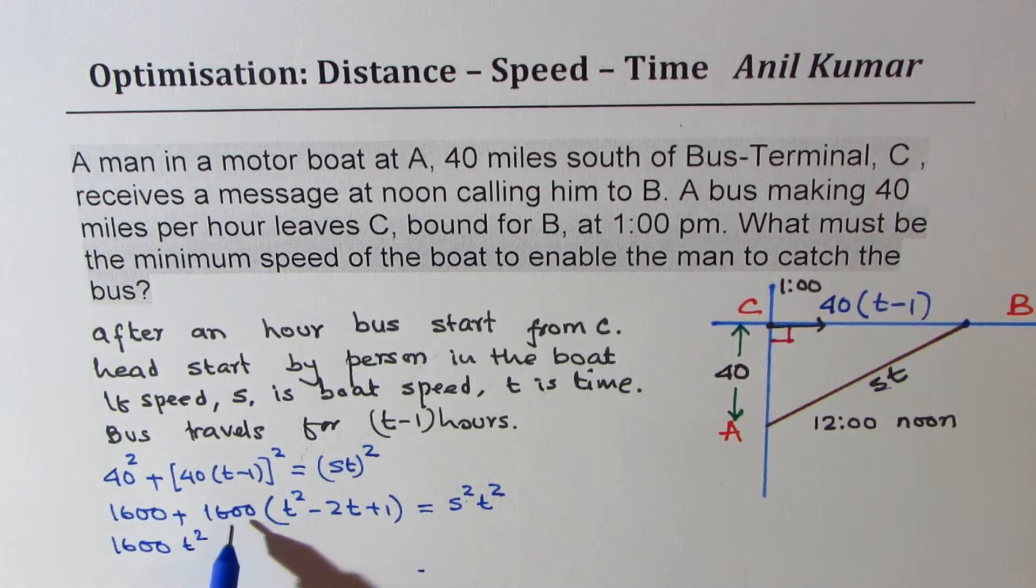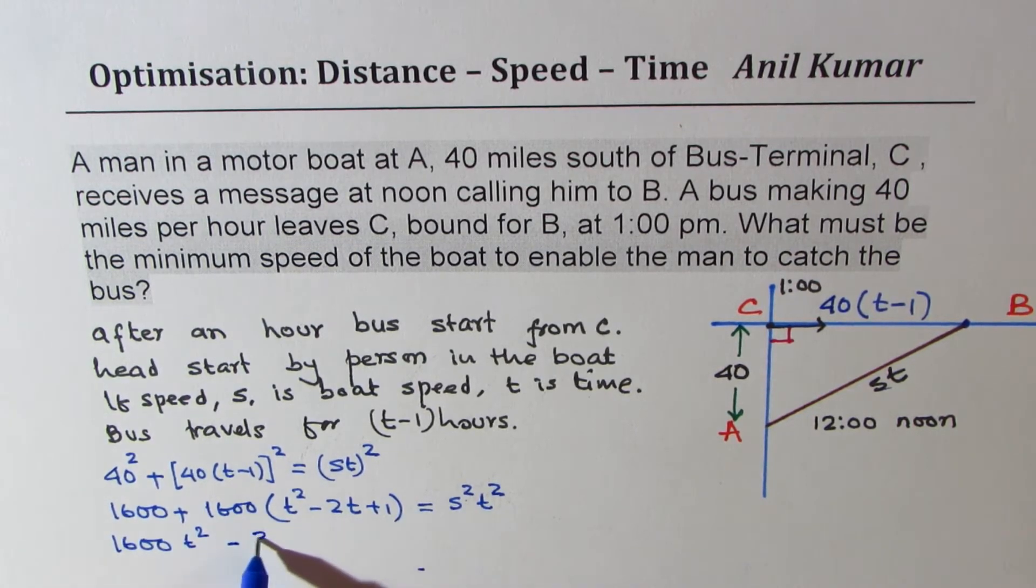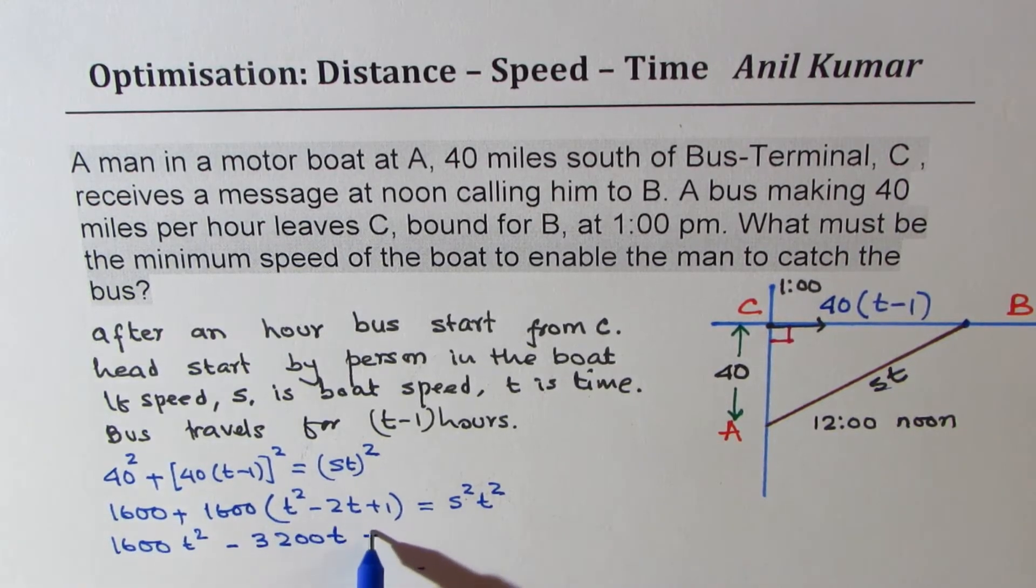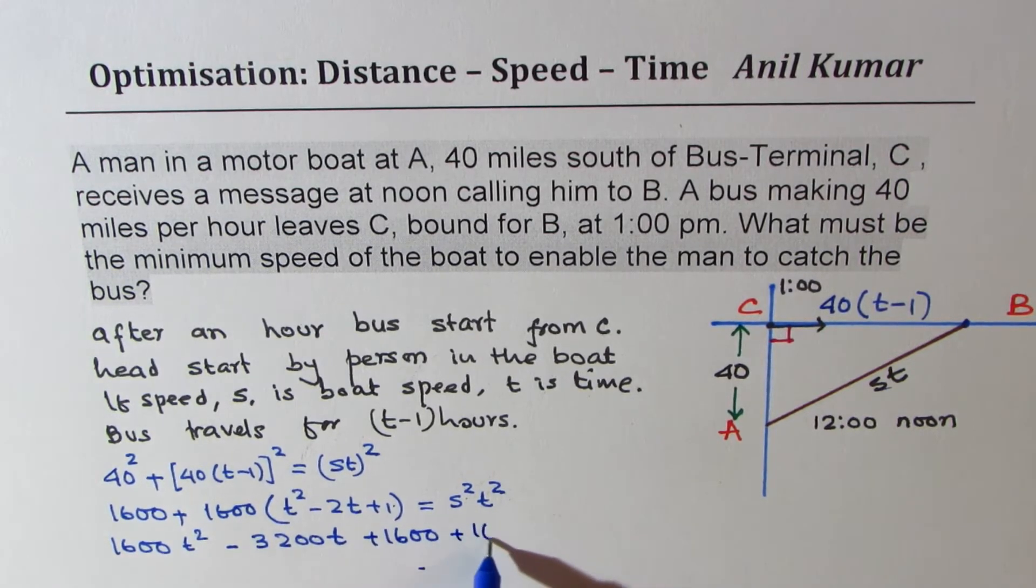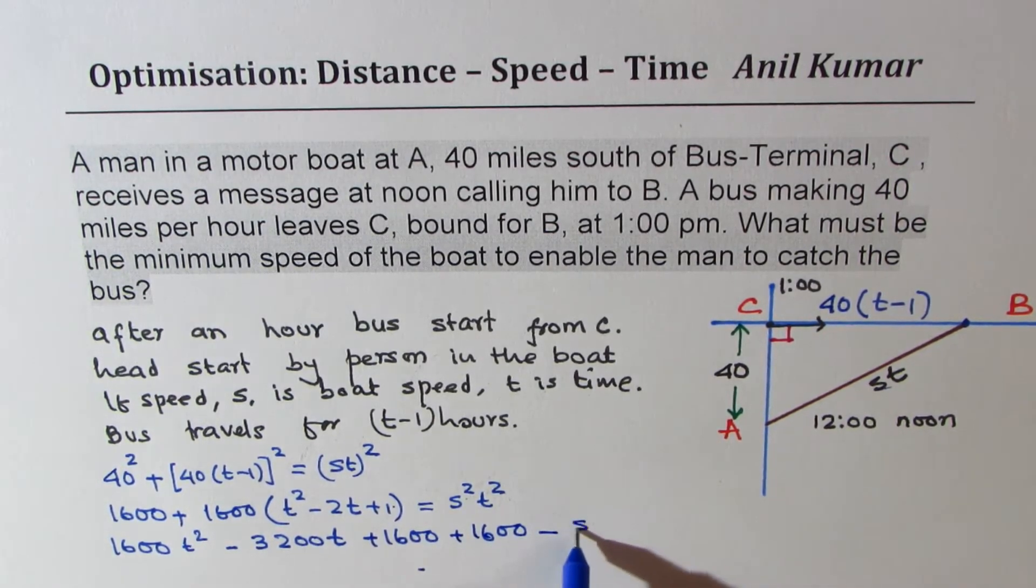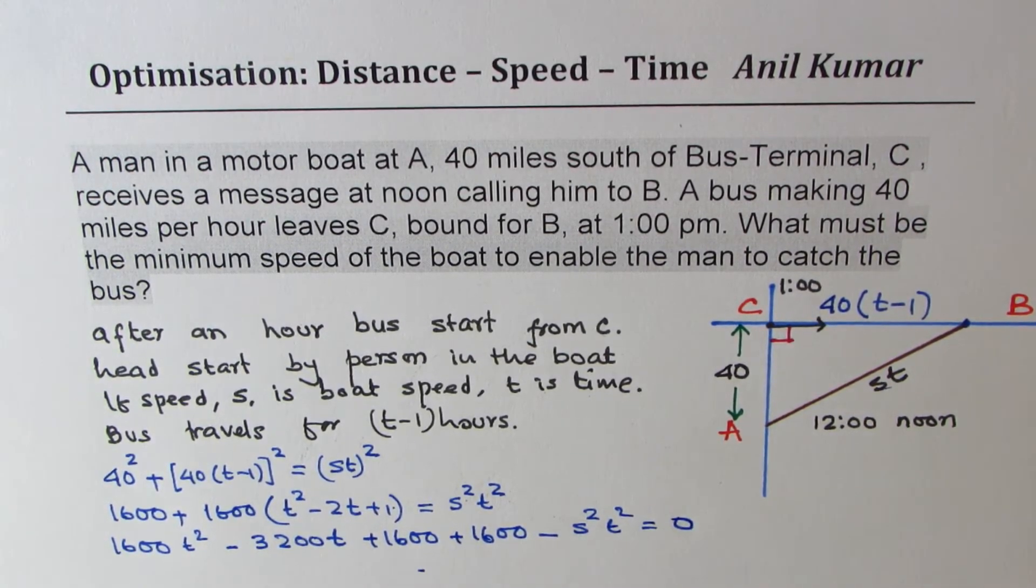We just expanded this square and here we get s squared t squared. Now we can form a quadratic equation in t squared and then solve it. Let us bring all the terms together to make this equation.